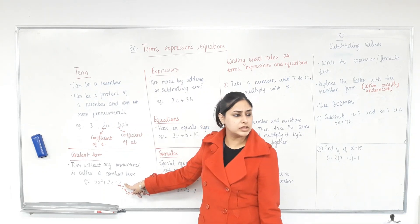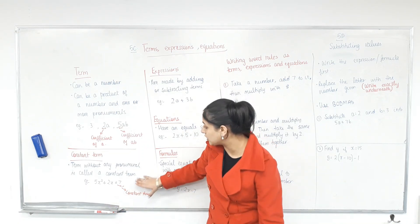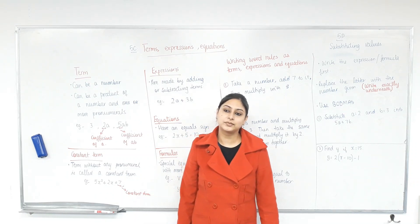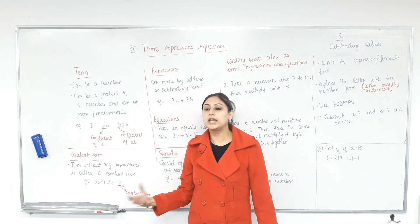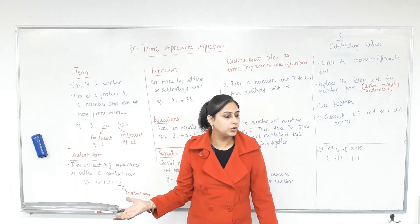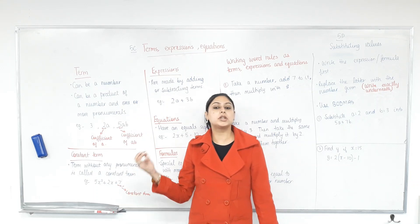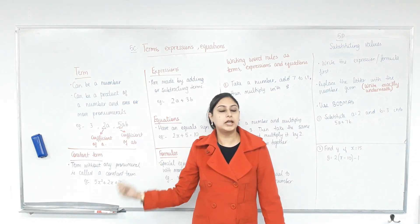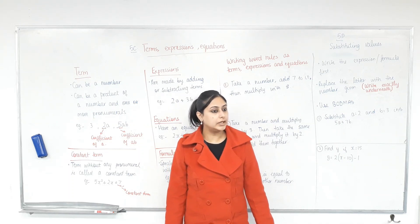What about this term? It's lonely — it doesn't have a pronumeral. Why is that called a constant term? The term that has no pronumeral is called a constant term. Because does it have a variable next to it? No. Can the value of 7 change? No — it's constant. So the term that does not have a variable, a pronumeral, is called a constant term. The 3 was the constant term.